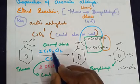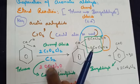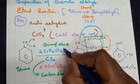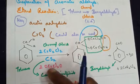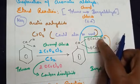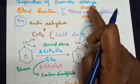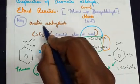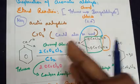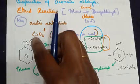Chromyl chloride has the molecular formula CrO2Cl2, which can be written as O=Cr(Cl)2=O. Both ways of writing it are correct. Apart from chromyl chloride, you can also use acetic anhydride and chromium trioxide as oxidizing agents.